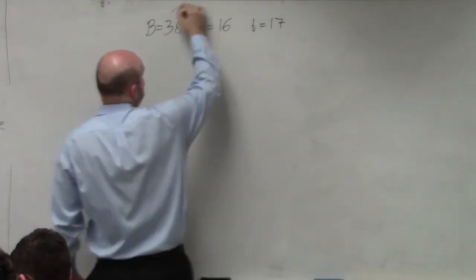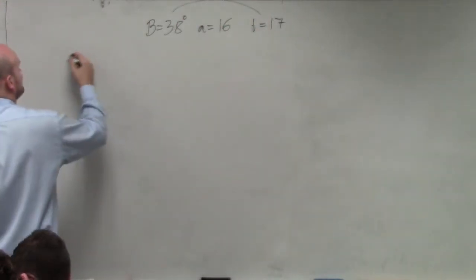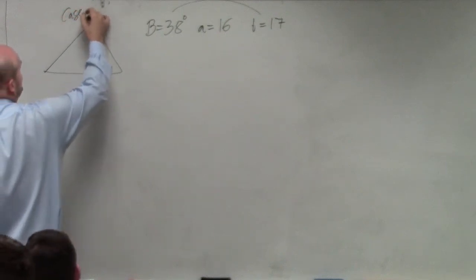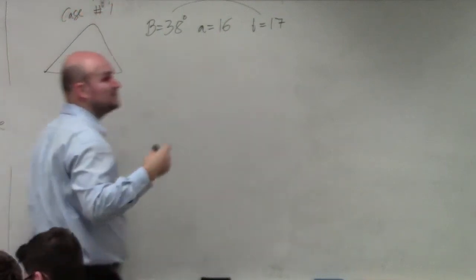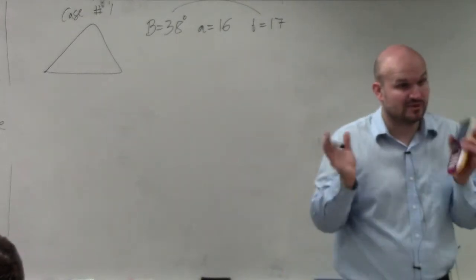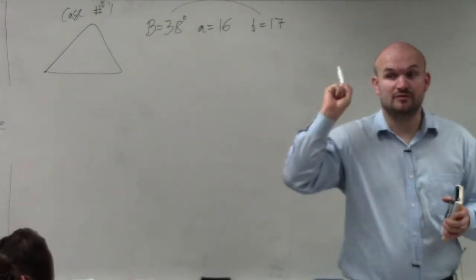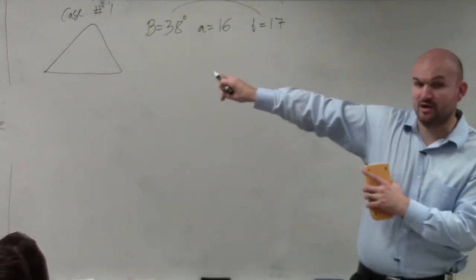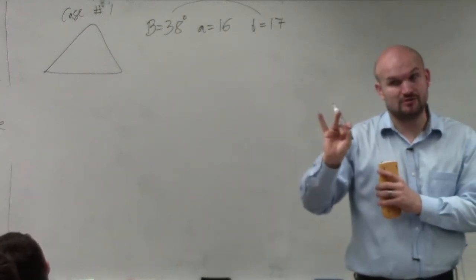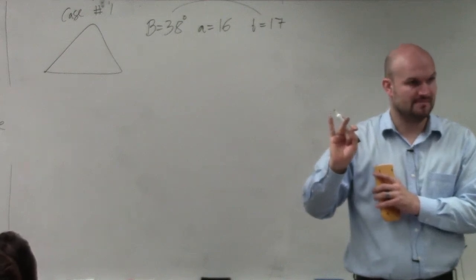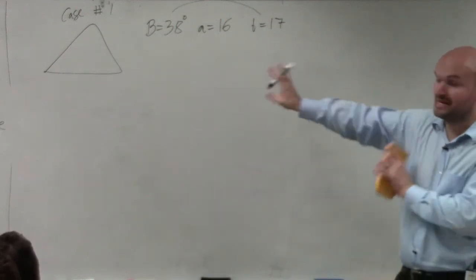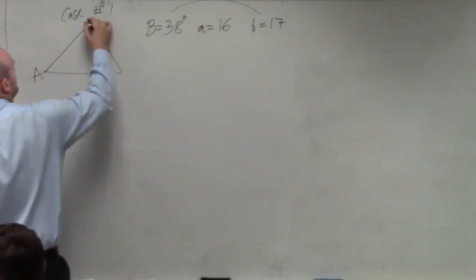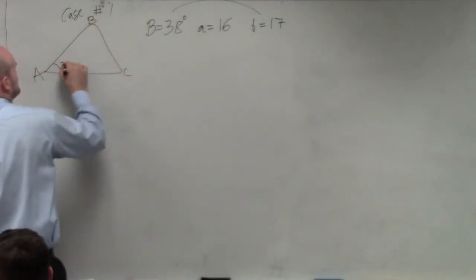I see I have a ratio over here, so the first thing I want to do is draw my triangle. I'm going to call this case number one, because when you have an ambiguous case — side-side-angle — you have no triangle, one triangle (which would be case one), or two triangles (case two). But we don't know what that other triangle is yet, so let's just solve one triangle. Here's the 38-degree angle.